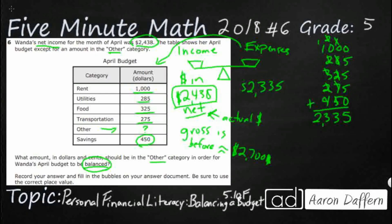But what we need is for it to be balanced. Right now it's a little bit imbalanced towards the income side. So what we can do is figure out how much is missing — let's just subtract the two. We subtract $2,438 and $2,335, and we will get our answer of $103. Make sure we bubble that in correctly. That's our answer.